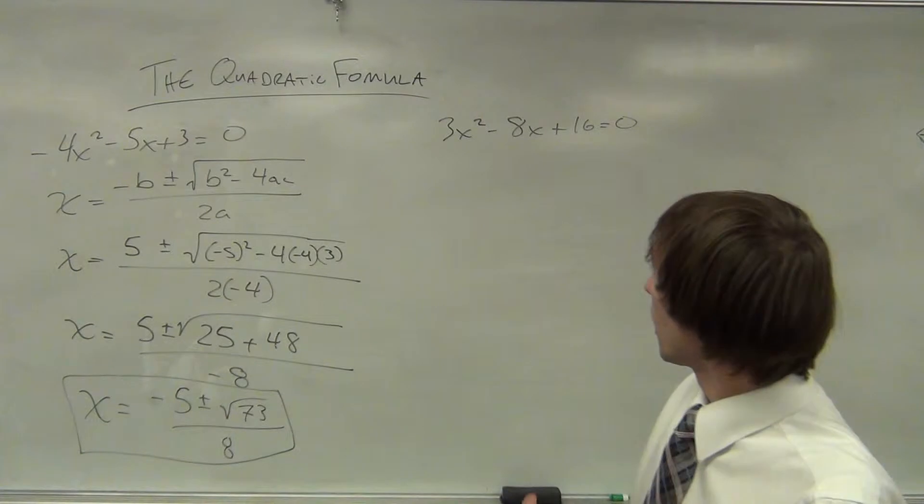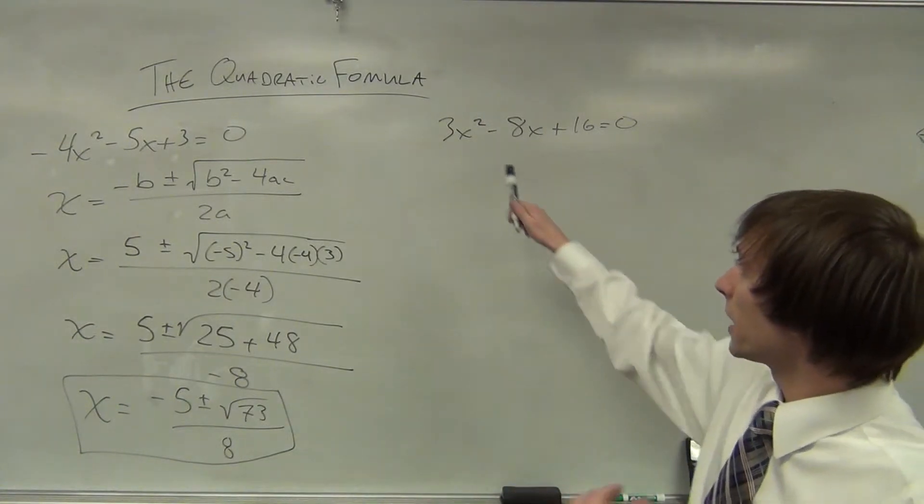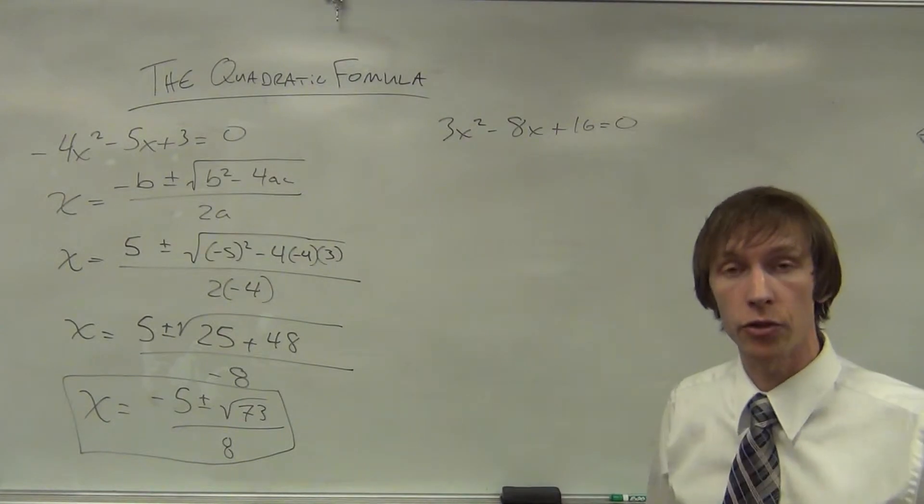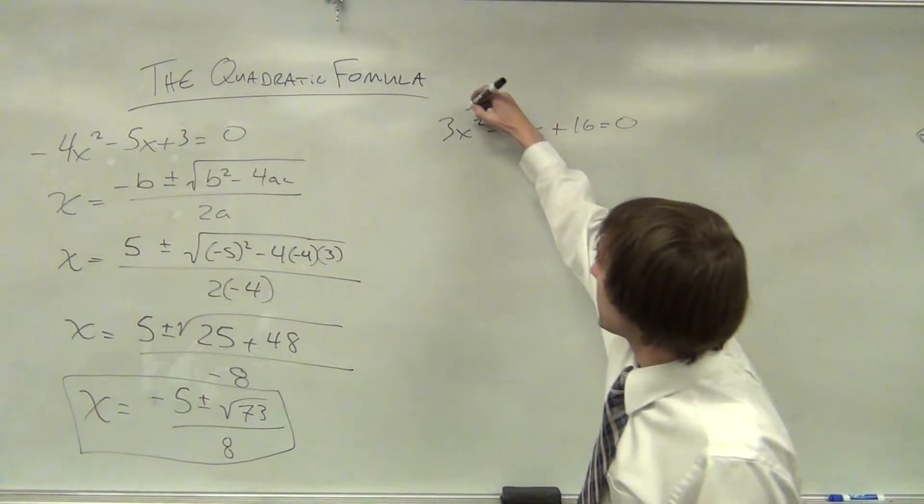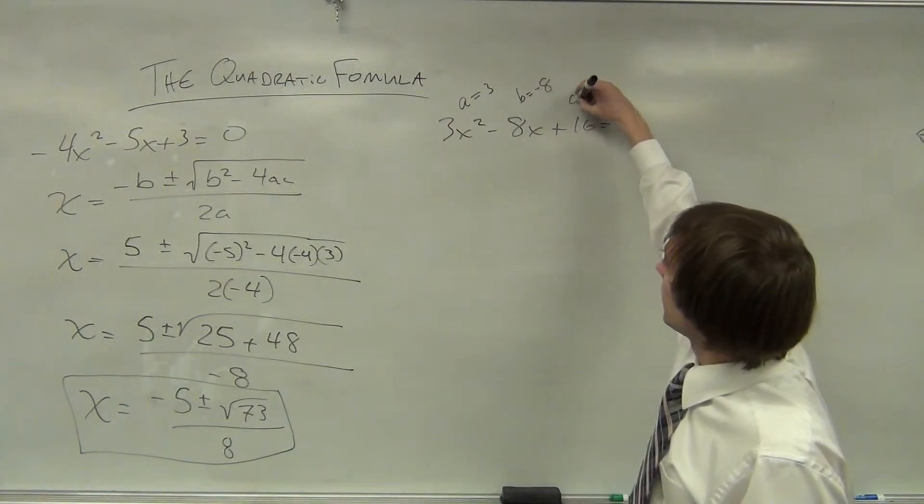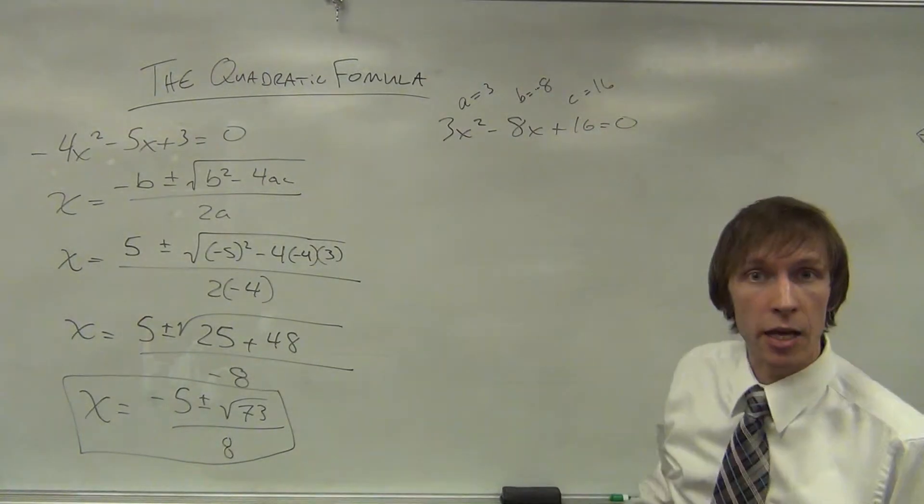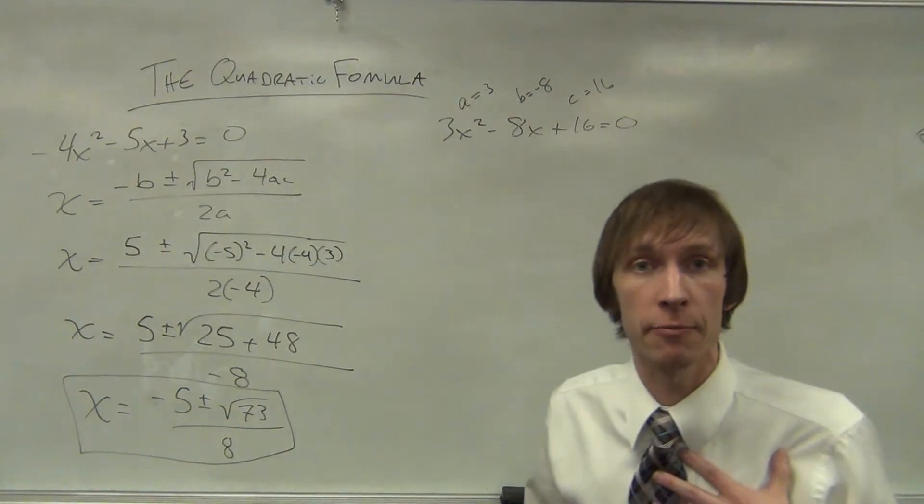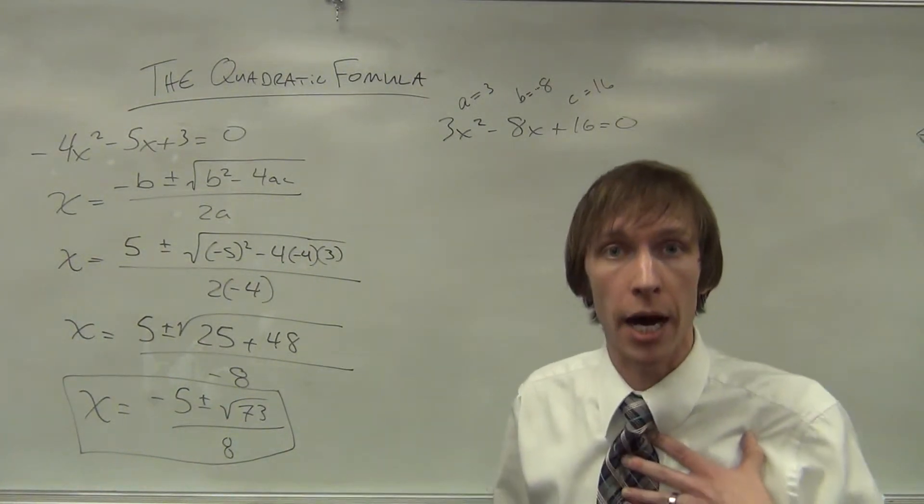Alright. For the second example, let's go ahead and take this. 3x² - 8x + 16 = 0. We're going to take a equals 3, b equals -8, and c equals 16, and we will put them into the correct place in our formula.